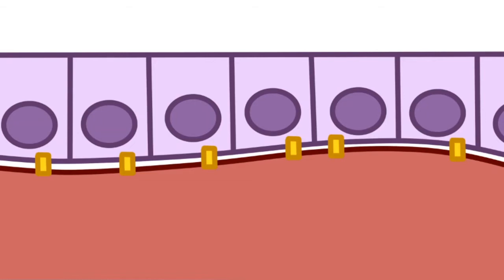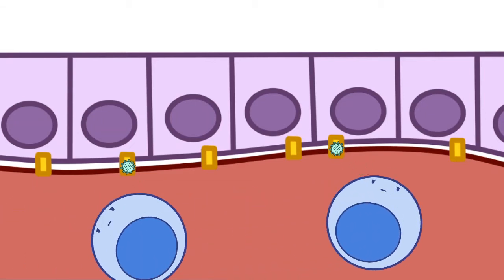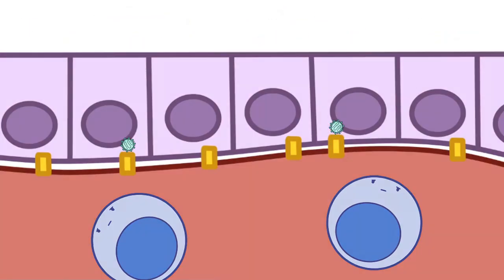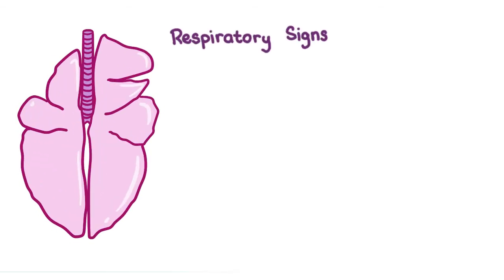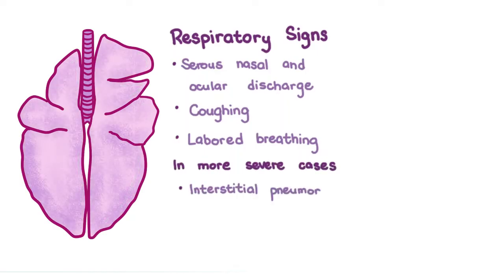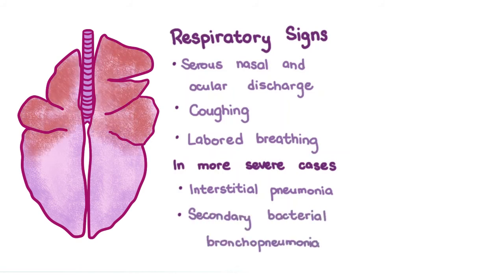As these mononuclear cells traverse the bloodstream, they interact with Nectin-4 expressed on the basolateral surface of epithelial cells in the respiratory, gastrointestinal, and urinary tracts. This results in respiratory signs such as serous nasal and ocular discharge, coughing, and labored breathing, somewhat similar to the signs of kennel cough. In more severe cases there could be interstitial pneumonia, and secondary bacterial bronchopneumonia commonly occurs due to immunosuppression and slowed mucociliary clearance.